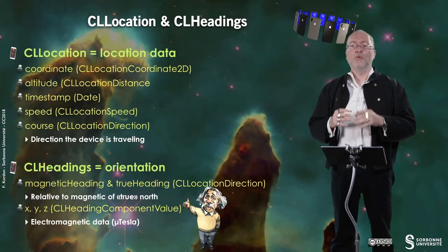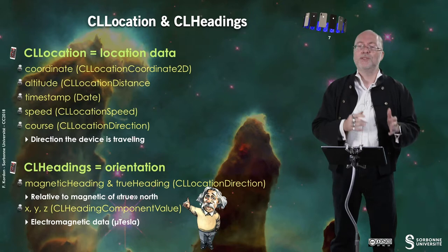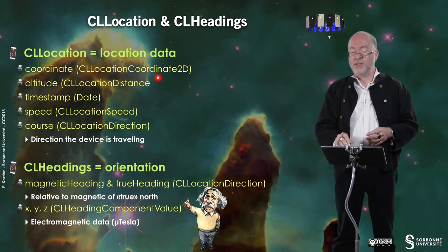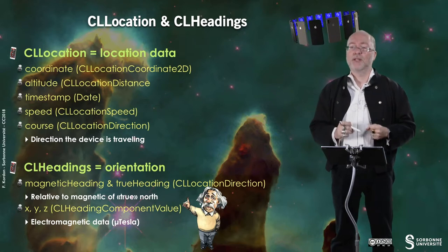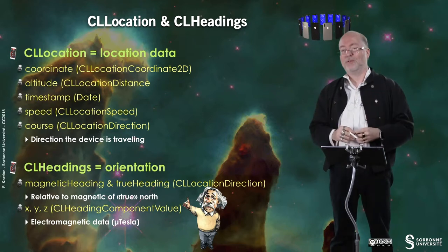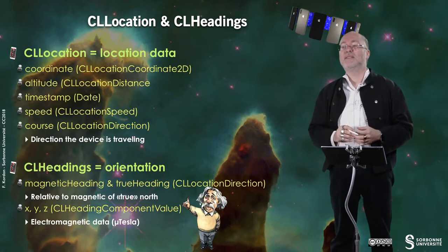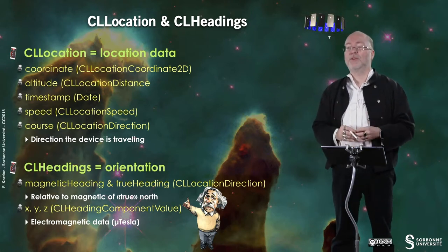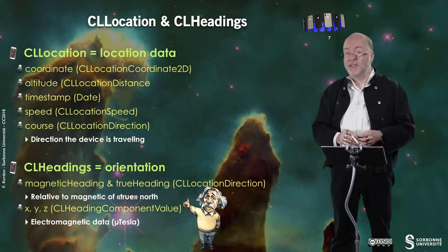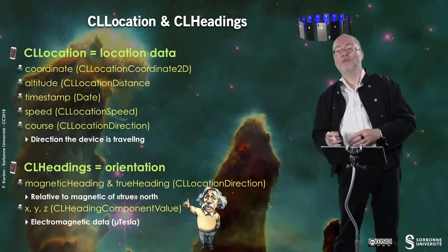When Core Location services are activated, the main type for location data is CLLocation. You can extract coordinates, altitude, a timestamp indicating when the information was collected, the speed of the device, and a course which is the direction the device is traveling. CLHeadings deals with magnetic north orientation, providing magnetic headings and true headings — angles relative to magnetic north or true north.